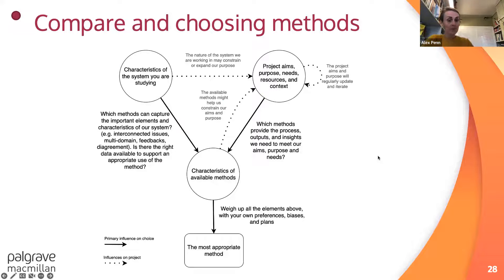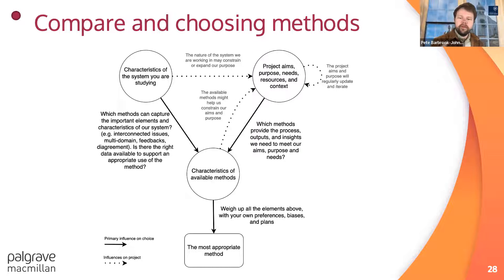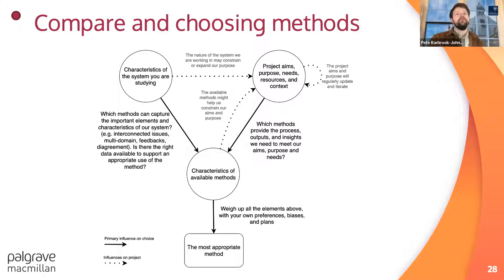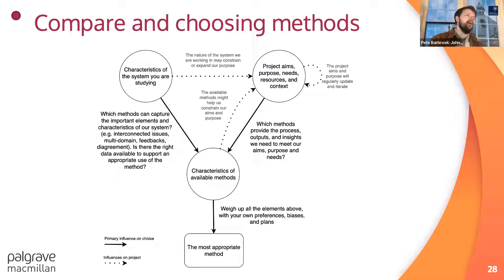There's then a chapter on comparing, choosing, and combining different methods. On choosing methods, it's really important to think about appropriateness — iterating through three circles: the project aims, purposes, and needs; the resources and context; and the characteristics of the system. Are we most interested in feedbacks, or in probabilistic connections? It's not a case of right or wrong methods or best or worst — it's most appropriate given these contexts.